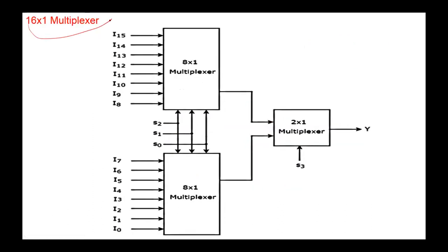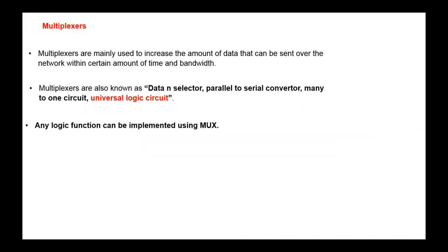Similarly, a 16-by-1 multiplexer is designed using two 8-by-1 multiplexers and an additional 2-by-1 multiplexer. We apply three select signals to both 8-by-1 multiplexers, and the fourth selection line is used to connect one of the outputs from the 8-by-1 multiplexers to the final output. Multiplexers are used in different computers and communication components. In communication systems, they are used to increase the amount of data that can be sent over the network within a certain amount of time and bandwidth.